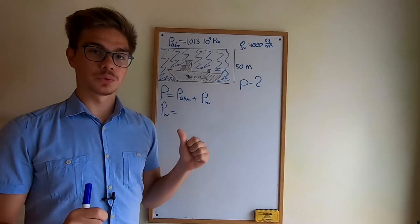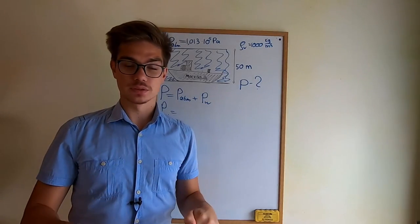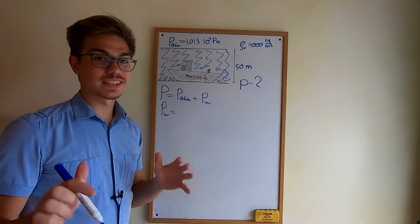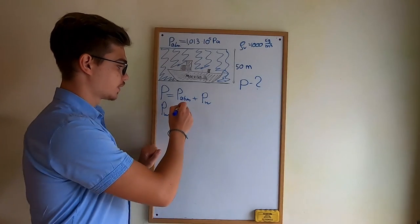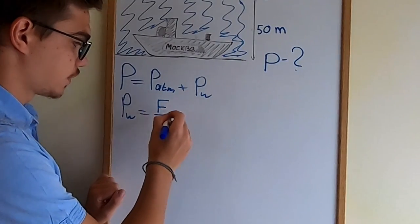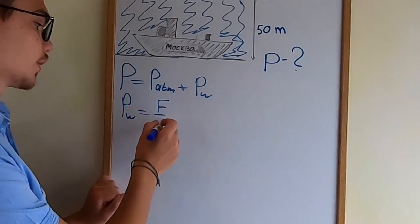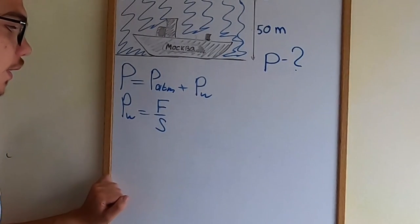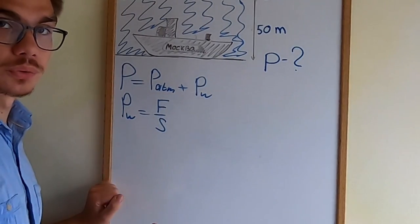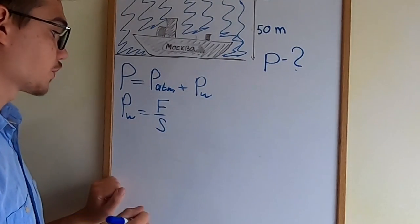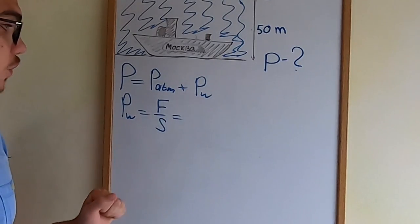So because the water is acting perpendicularly on the ship, it can be calculated the following way: the force that is acting on the ship divided by its area. But we don't know neither of those. Therefore we want to rewrite this expression somehow in a more advantageous way.